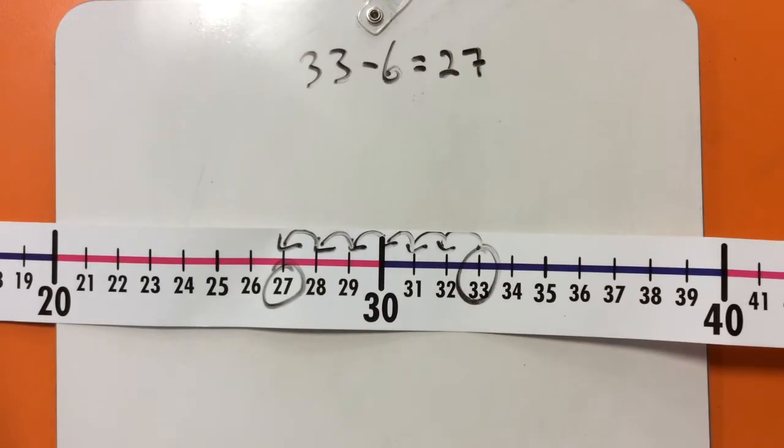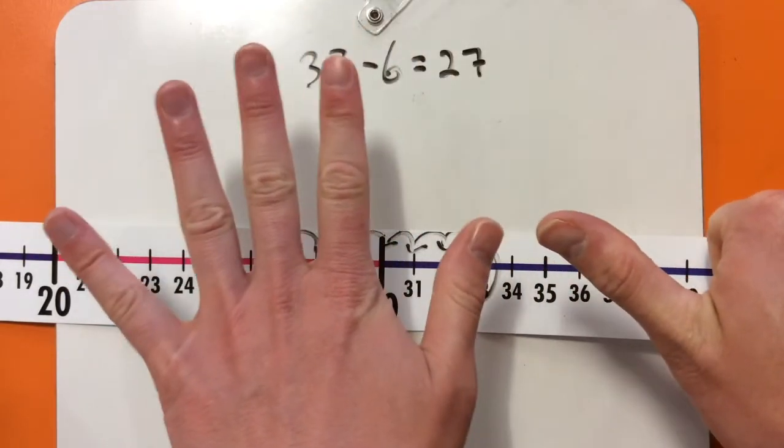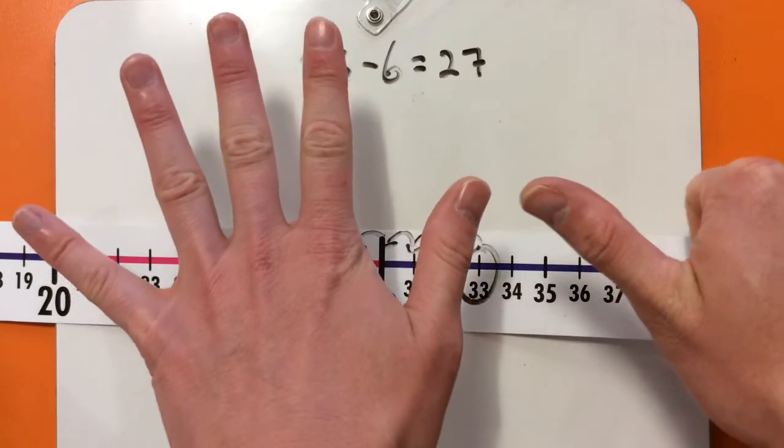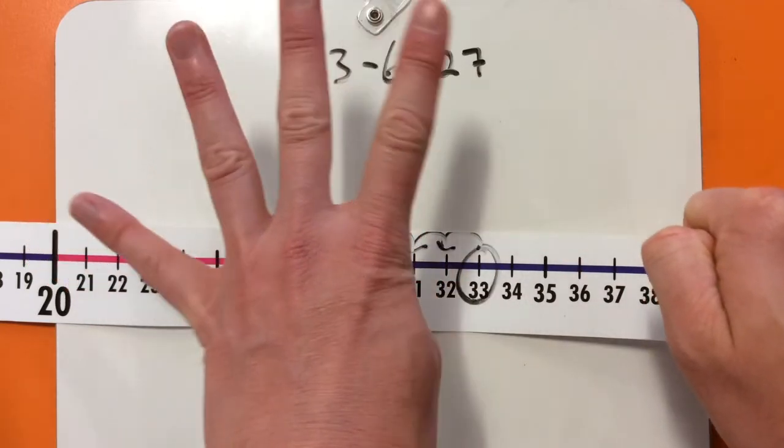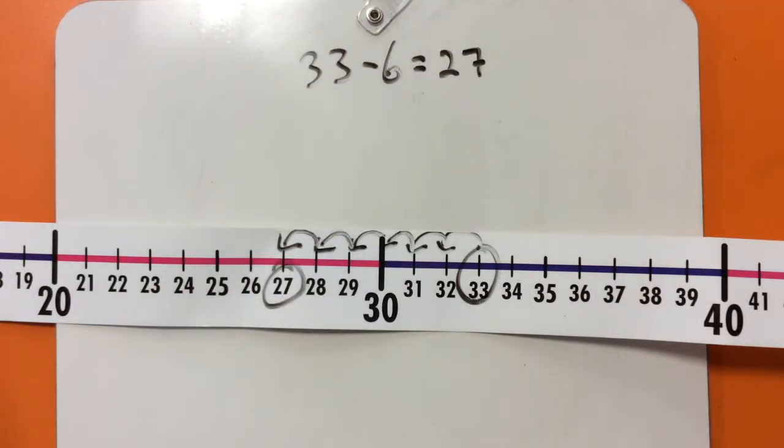Similarly, instead of putting it on a number line, we could put 6 fingers out, put 33 in our head, so I count 33, 32, 31, 30, 29, 28, 27. And that gives us the same answer.